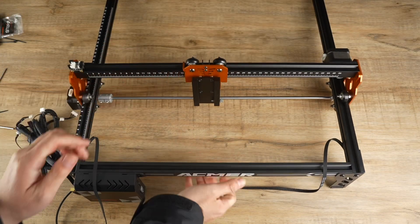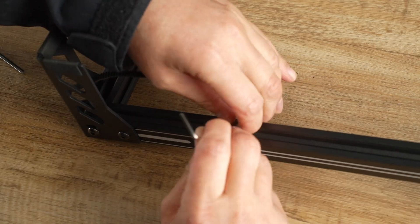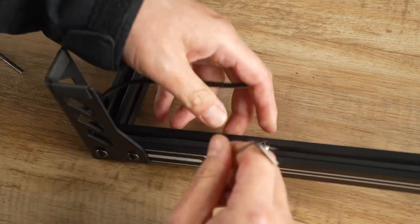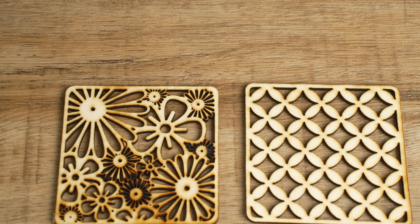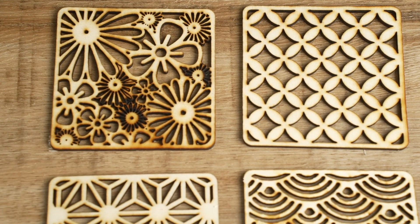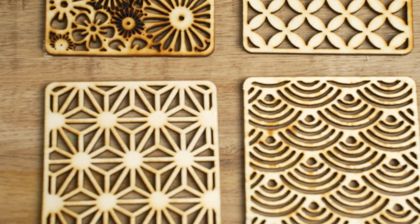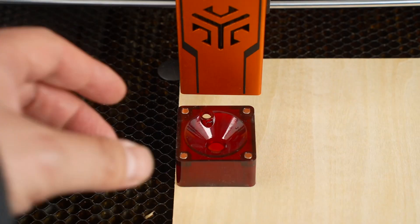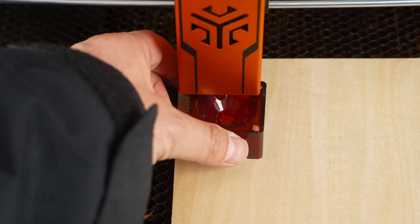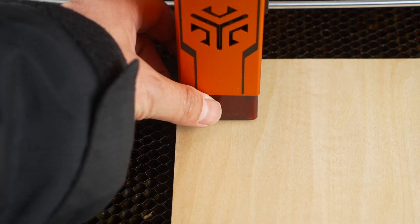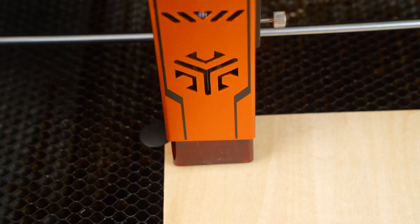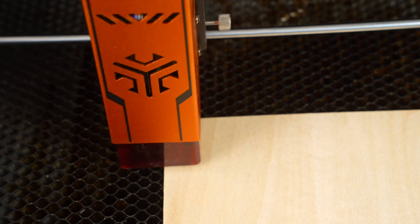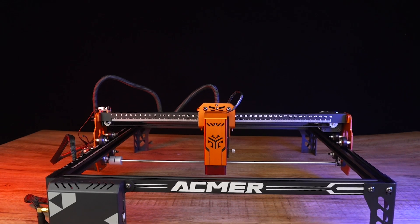However, there are still some areas for improvement. Firstly, the installation guide wasn't very clear to me, resulting in spending more than 1.5 hours to complete setup. Secondly, like most entry-level machines, this one lacks air assist, which can lead to burn marks during cutting. Lastly, after adjusting the focus, the laser module ends up being too close to the engraving object, making it inconvenient to secure the object to the honeycomb workbench.